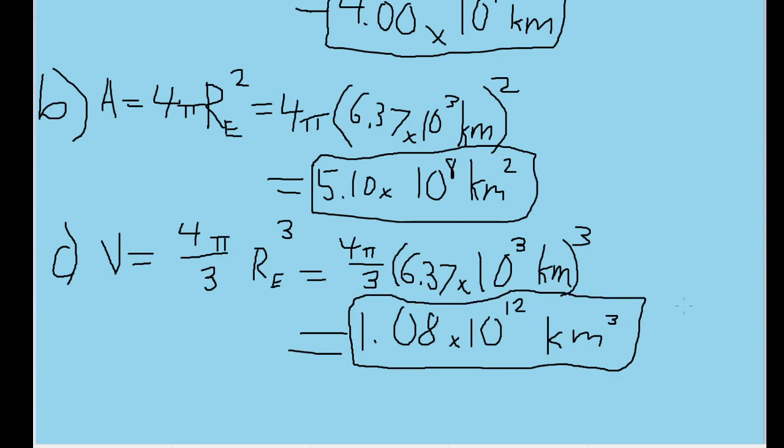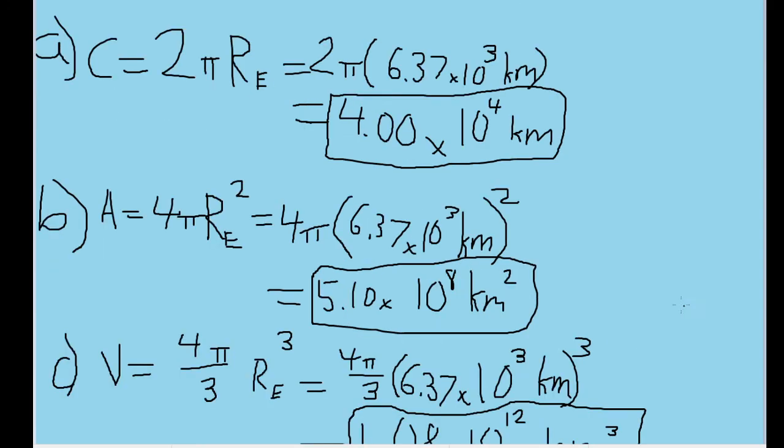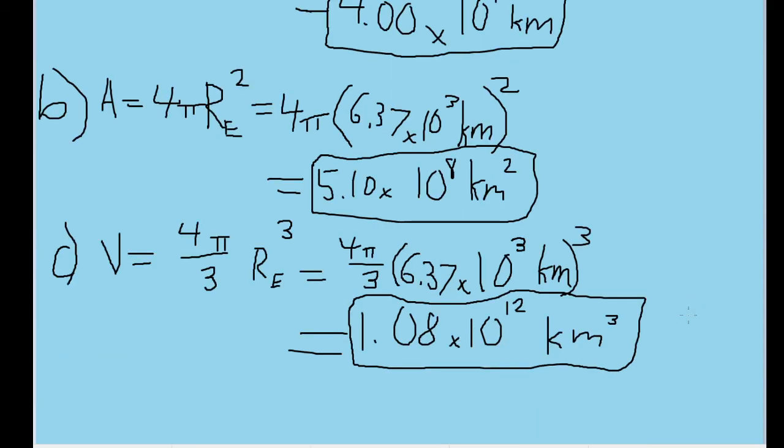And now all three of these answers represent our approximations for the circumference, the surface area, and the volume of the Earth as a sphere.